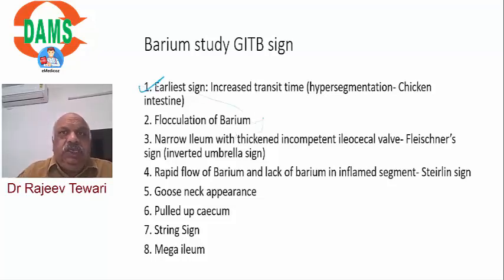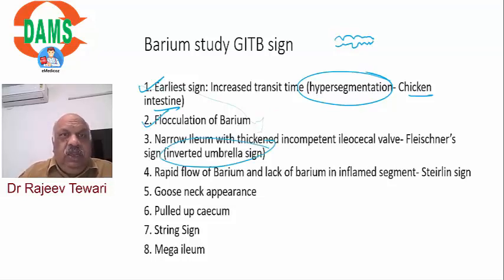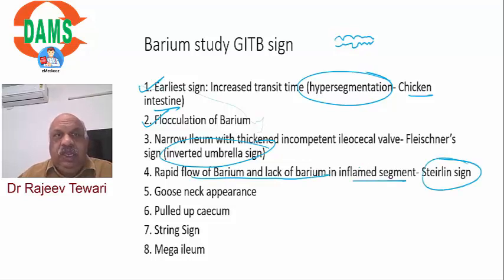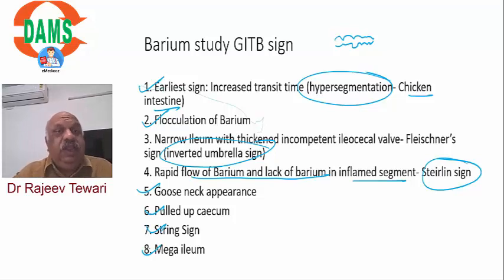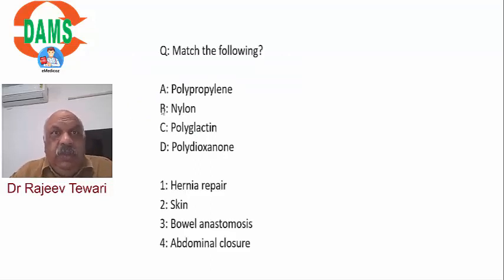Other signs of gastrointestinal tuberculosis: the earliest is chicken intestine (hypersegmentation), then flocculation of barium in the ileum, inverted umbrella sign, rapid flow of barium in the inflamed segment (Sterling sign), gooseneck deformity, pulled-up cecum, string sign, and the ileocecal junction as the most common site. String sign can be seen here too, but in the previous question it referred to HPS.